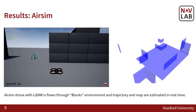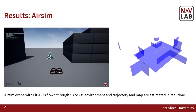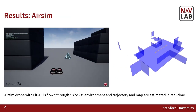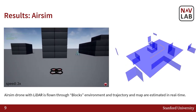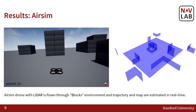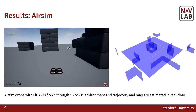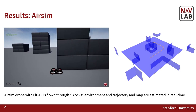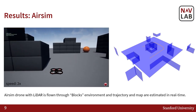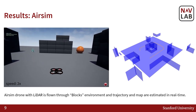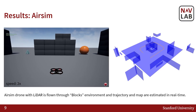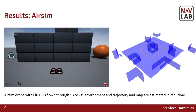Here we show results of our approach on the AirSim simulator, in which a drone is flown through the blocks environment, and its trajectory and plane map of the environment are constructed in real-time. We can notice towards the end of the trajectory that a loop closure is detected, and both the trajectory and map are corrected accordingly.